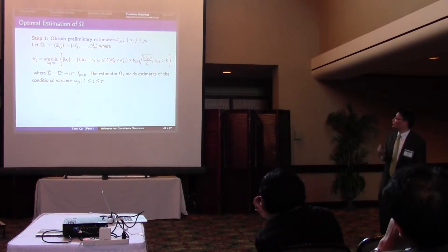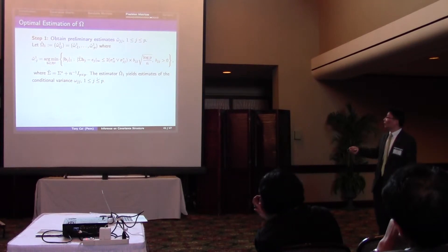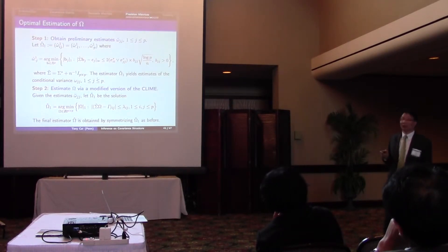This boldface bj is the j-th column of the precision matrix. So that appears on both sides, but it's still a convex problem and we can solve. And once we solve this,